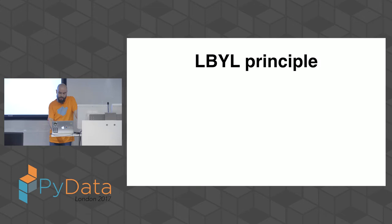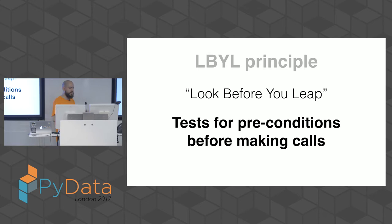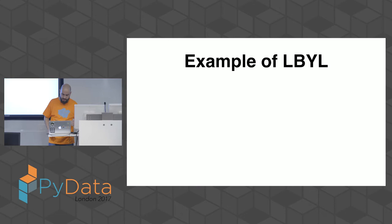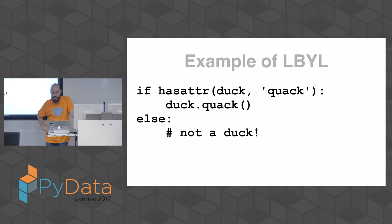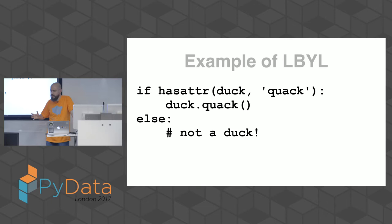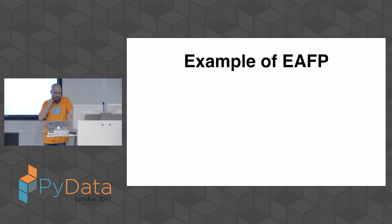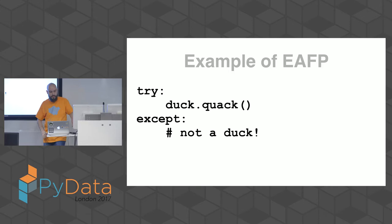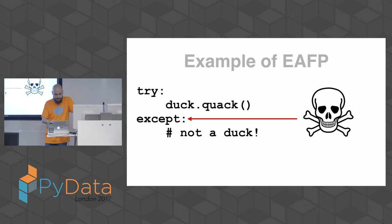The opposite principle is LBYL — 'Look Before You Leap' — where you test preconditions before making calls. For example, before calling duck.quack(), you first check if the object has the quack method, then call it. The downside is you access the object twice. The Pythonic way: just try to call the method directly, and if something goes wrong, capture the exception.